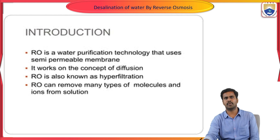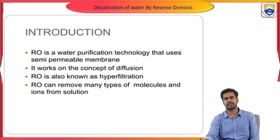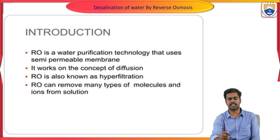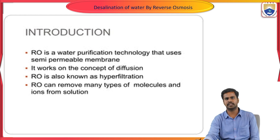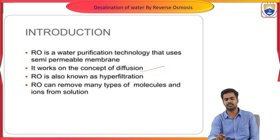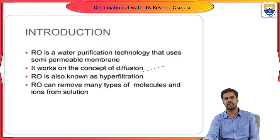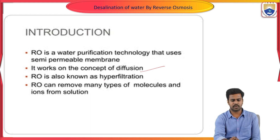Reverse osmosis is a type of water purification technology that uses a semi-permeable membrane. It works on the concept of diffusion. Diffusion is the migration or movement of ions from one region to another, based on concentration. The principle involved in reverse osmosis technology is diffusion — the migration or movement of solvent molecules from a high concentration region to a low concentration region. Reverse osmosis is also known as hyperfiltration.